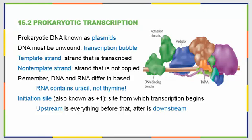Prokaryotic DNA exists in circular rings known as plasmids. The DNA must be unwound, and when it's opened up to be copied, a transcription bubble is made. There are two separate strands of DNA: the template strand that will be copied and the non-template strand that will be left alone. Remember, when making RNA from DNA, different base pairs are used — RNA contains uracil, not thymine.